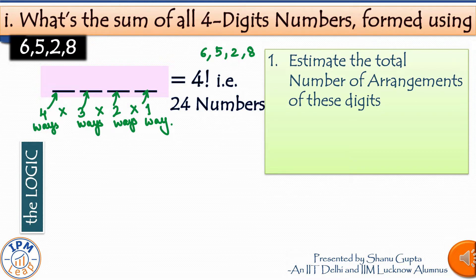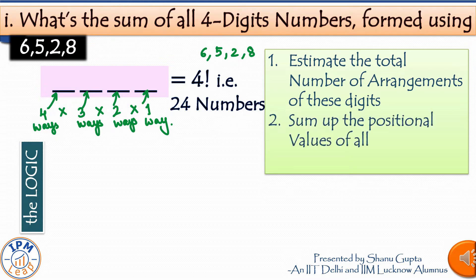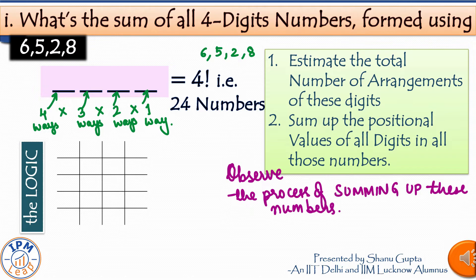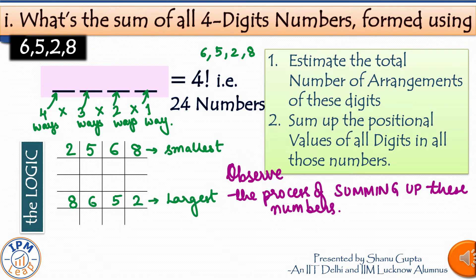The next step is to sum up the positional values of all digits in all those numbers. To clarify our thought process, let's revisit how addition of these numbers works using a sample of four or five numbers. The smallest number would be 2568 and the largest 8652. In between, there are many numbers — let's list two arbitrarily: 5286 and 6825. When we add up these numbers, we add all digits in the units place, then tens, then hundreds, then thousands.